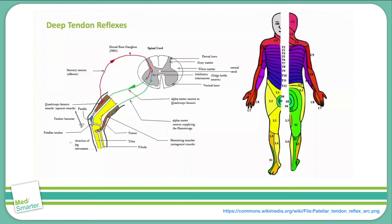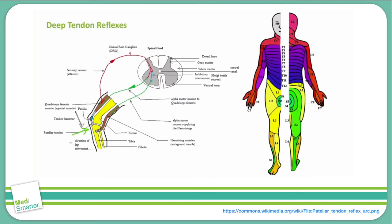Looking at the reflex arc, we can visualize the pathway of a reflex. It starts when the hammer strikes the tendon — in the case of the patellar reflex shown here, that's the patellar tendon. This causes a stretch in the tendon, sending an afferent signal back toward the spinal cord via the dorsal root ganglion. That signal enters the posterior horn via the spinal nerve at the corresponding level. An efferent signal then travels from the anterior horn back toward the muscle via alpha motor neurons, causing the quadriceps to contract.